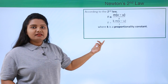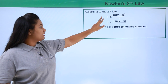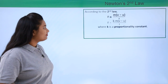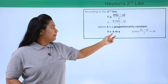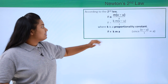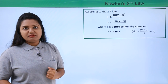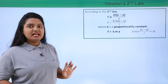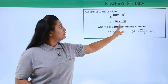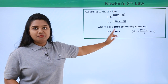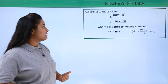Here k is the proportionality constant used to remove the proportionality symbol. Now, since (v - u)/t equals the acceleration a of the body — that is, the change in velocity divided by the time taken — we can replace (v - u)/t with a, giving F = kma.